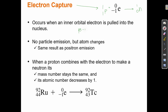Beta decay is just this reaction in reverse: a neutron becomes a proton and releases an electron, the beta particle. We can see they're really just the opposite — if a proton captures an electron it turns into a neutron, and if a neutron becomes a proton it emits an electron or beta particle. So electron capture and beta decay are the reverse of each other.